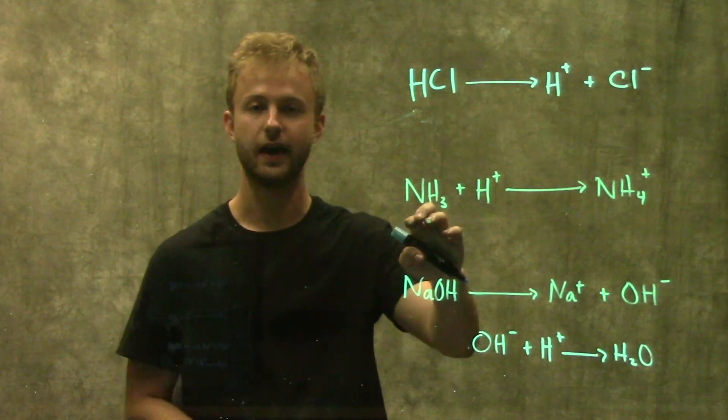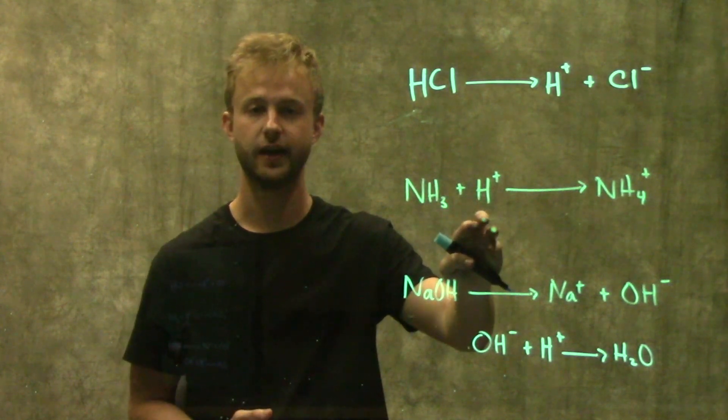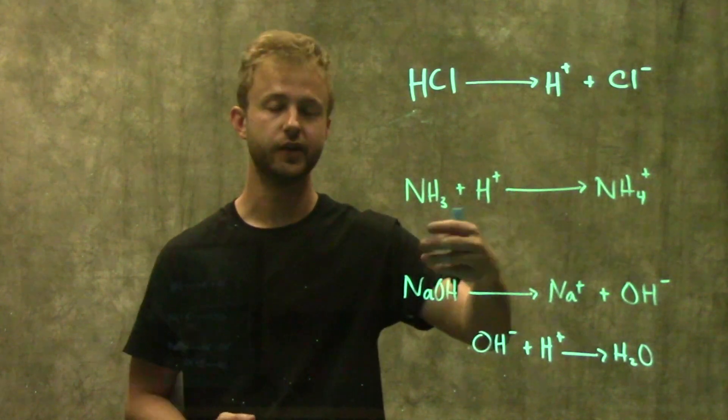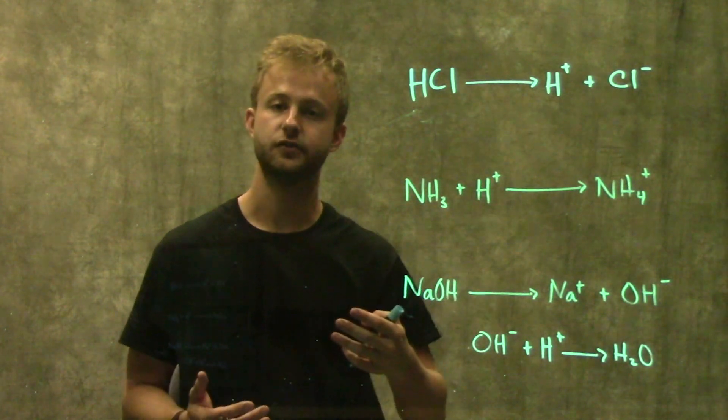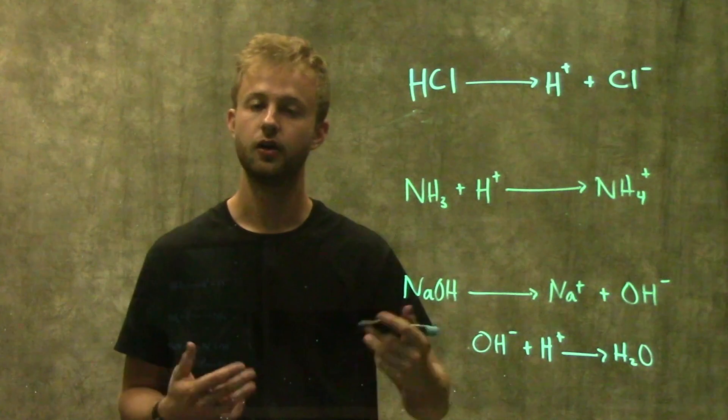We have our ammonia and we add it to a solution, and that ammonia will interact directly with a hydrogen atom to form ammonium. When it does that, it takes hydrogen atoms out of solution, making the solution less acidic or more basic.